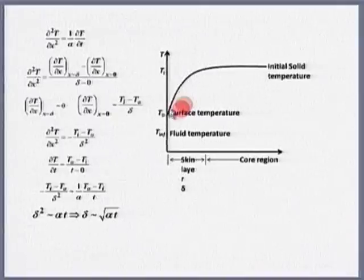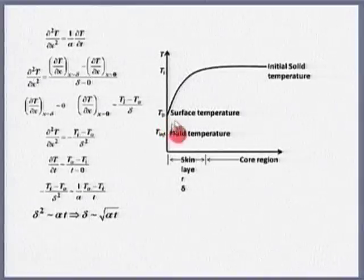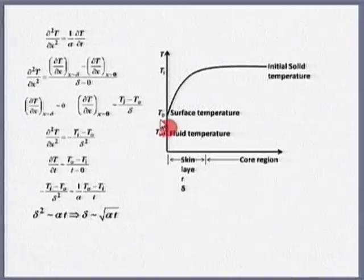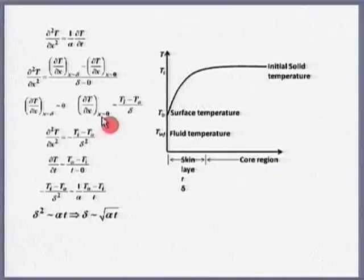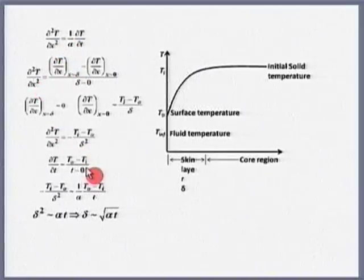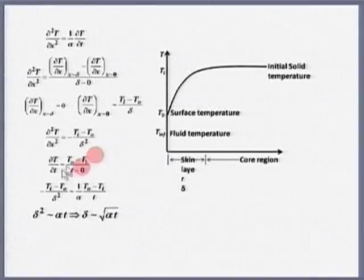What about ∂T/∂x at x tending to 0? That is very much on the outer surface where there is a slope. That slope is (T_i − T_0)/δ. Substituting back, ∂²T/∂x² is of the order of −(T_i − T_0)/δ². Let us keep this in the back of our minds.